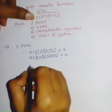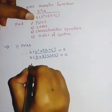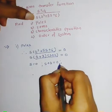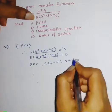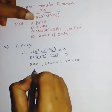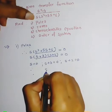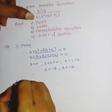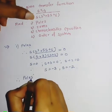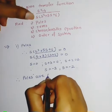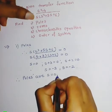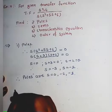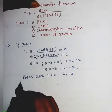Now equate each factor to zero. s = 0, then s + 3 = 0 gives s = −3, and s + 2 = 0 gives s = −2. Therefore the poles are s = 0, s = −2, and s = −3.